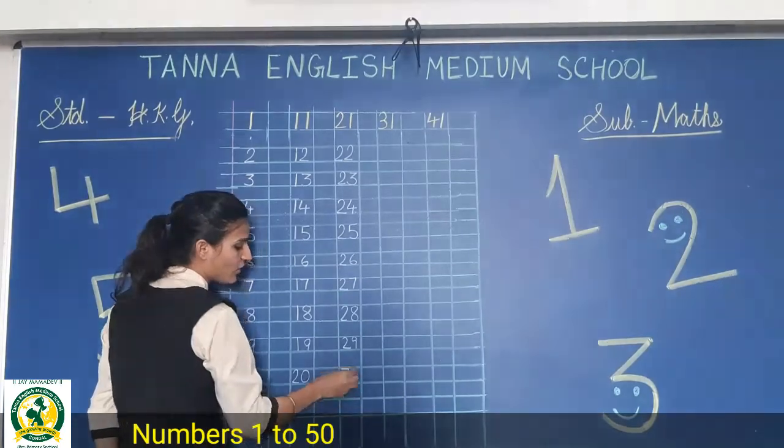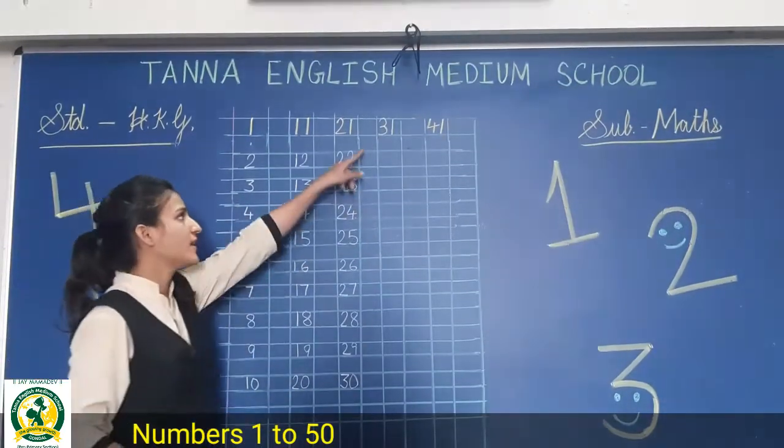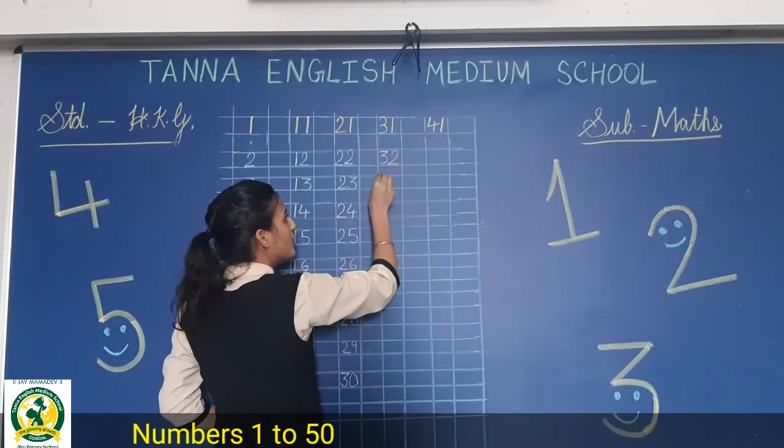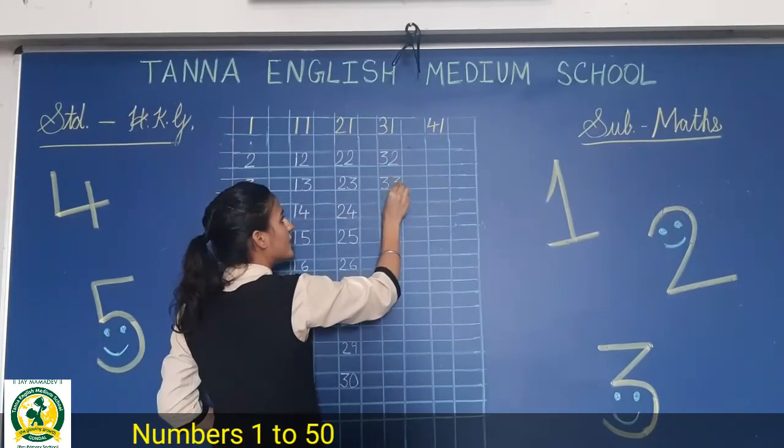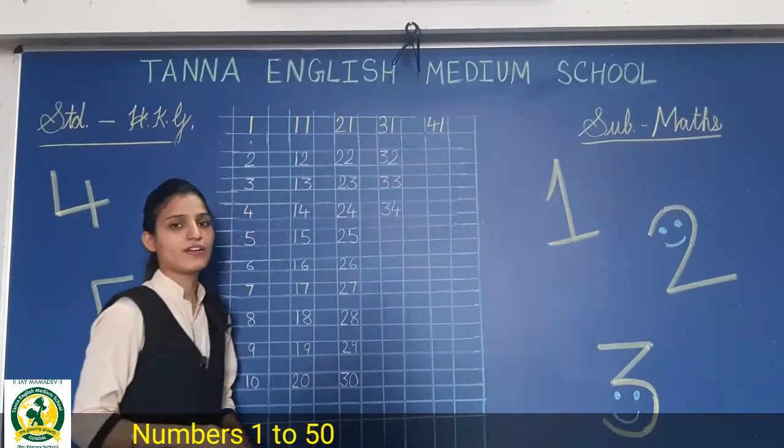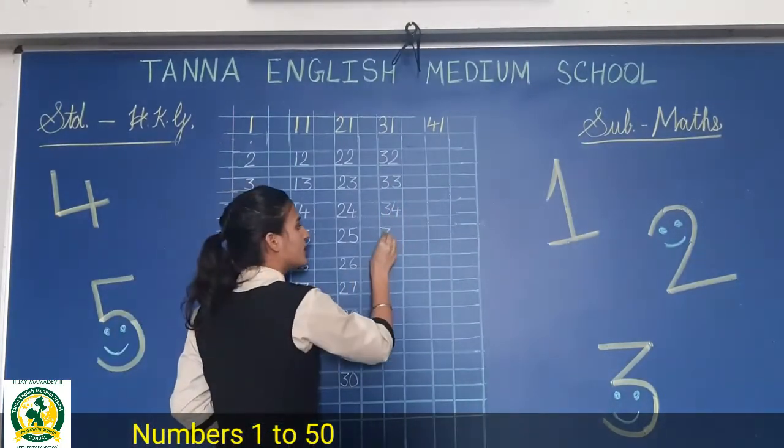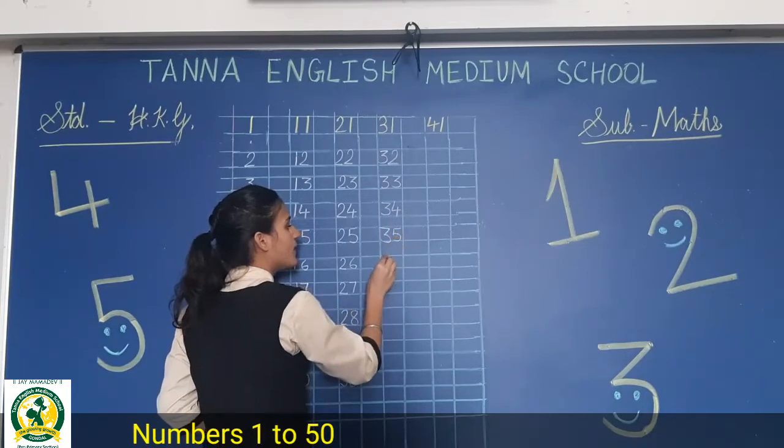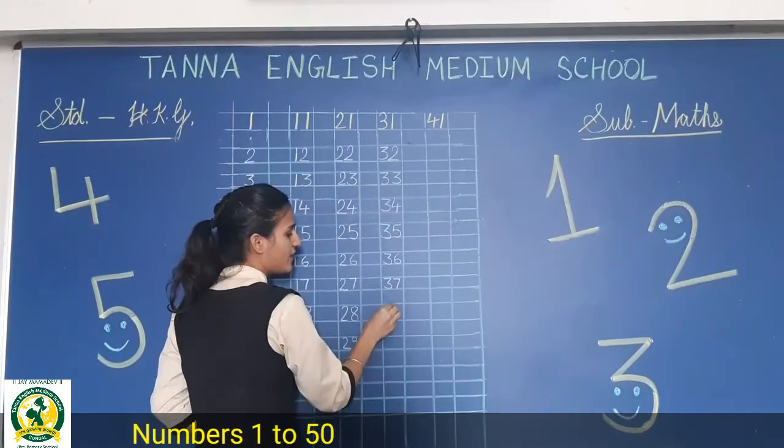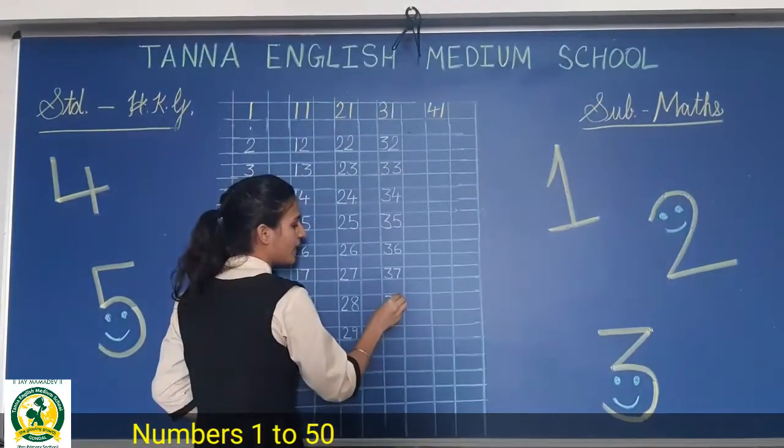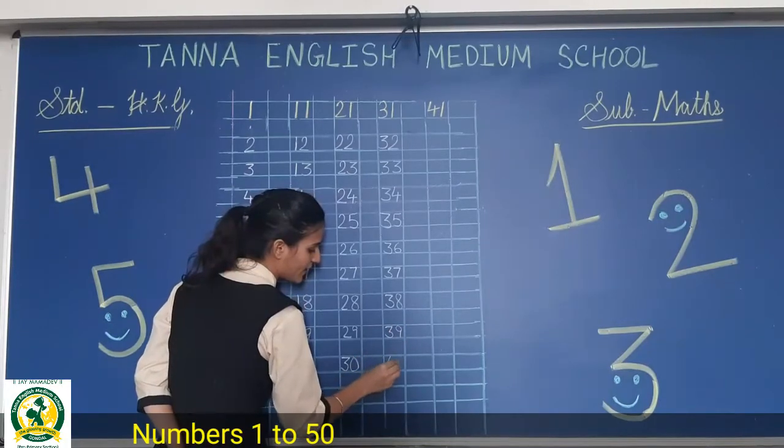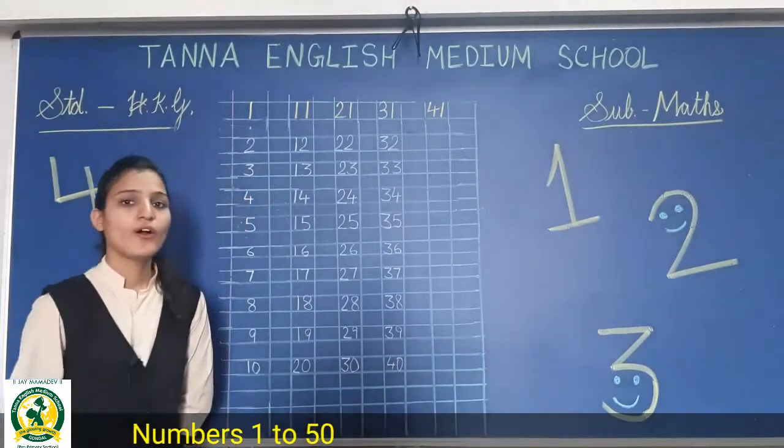And after 29, 3, 0, 30. 31, 32, 33, 34, after 34, 35, 36, 37, 38, 39, 4, 0, 40.